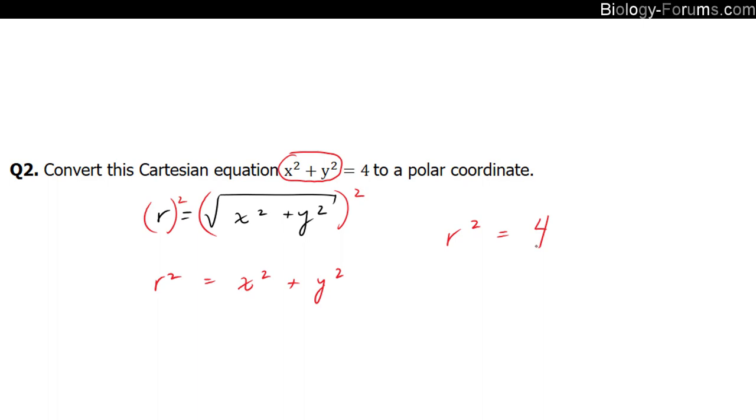Now remember, you always want to end up with r equals. So the last step would be to square root both sides, and we end up with r equals 2.